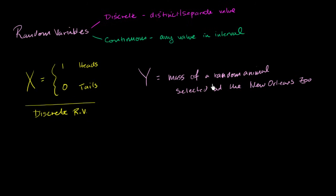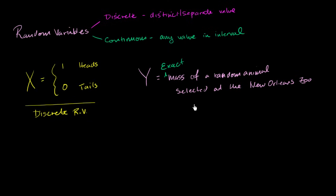Is this a discrete or a continuous random variable? Well, the exact mass of a random animal — or any random object in our universe — can take on any of a whole set of values. Who knows exactly the number of electrons that are part of that object at that moment? Who knows the neutrons, the protons, the exact number of molecules in that animal at that exact moment?